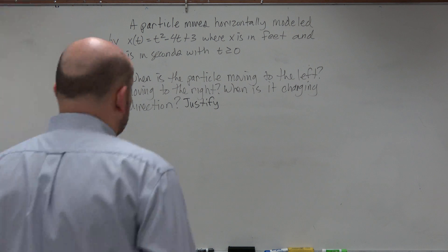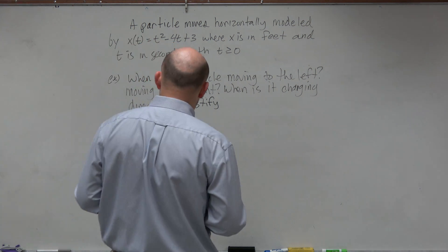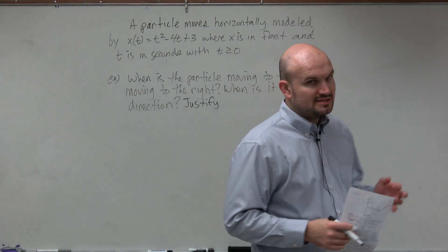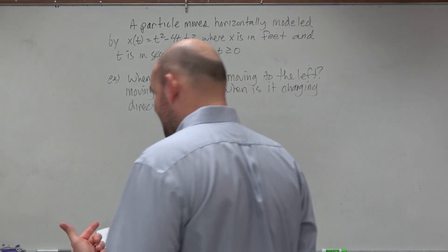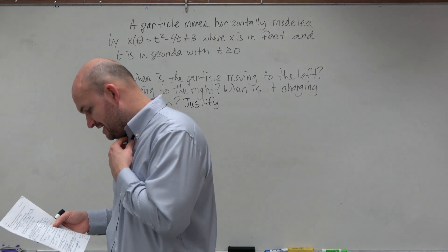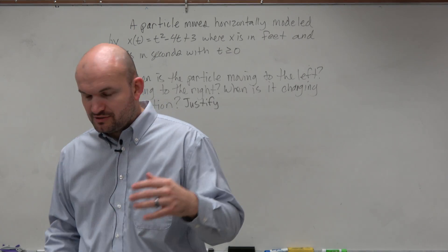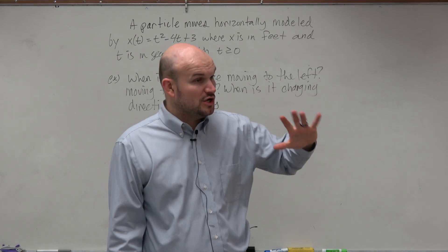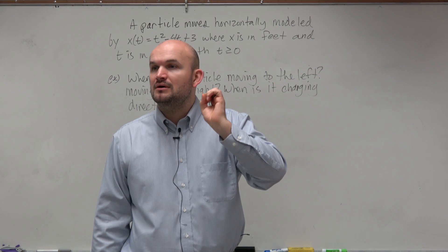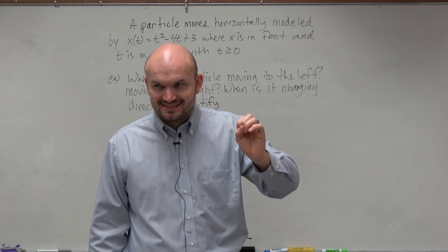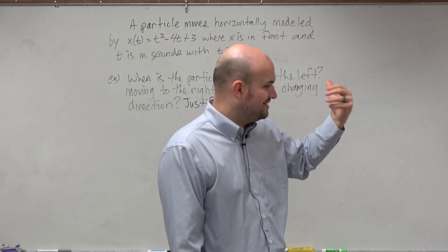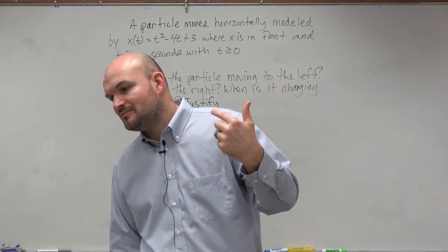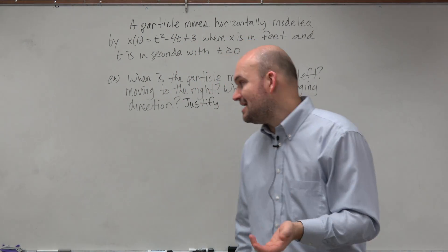So if we're looking for when the particle is moving to the left and when the particle is moving to the right, and then when is it changing direction. So let's kind of put this into context so we can better understand what exactly they're asking. So when the particle is changing direction, we know that the velocity is going to be equal to 0. And we know that when the particle is moving to the left, the velocity is negative. And when the particle is moving to the right, we know the velocity is going to be positive.